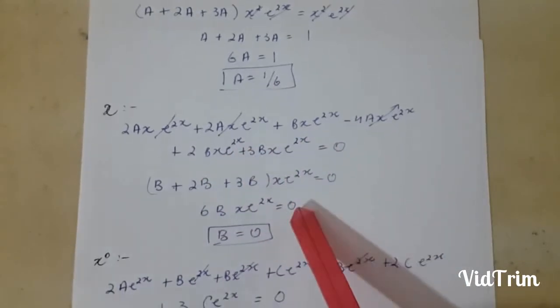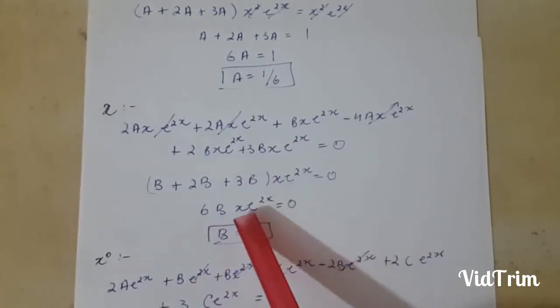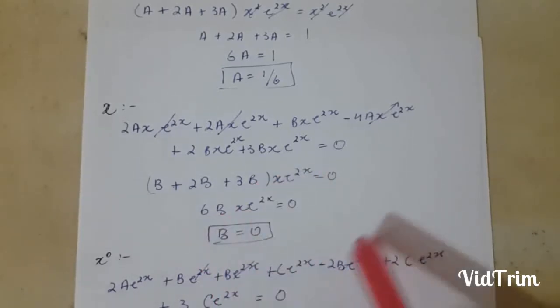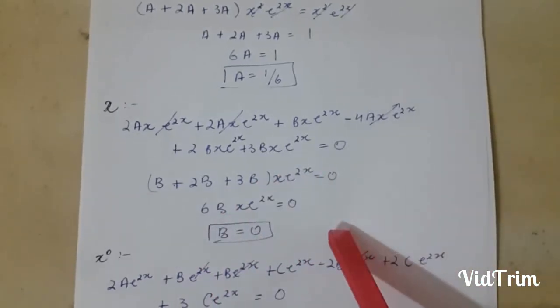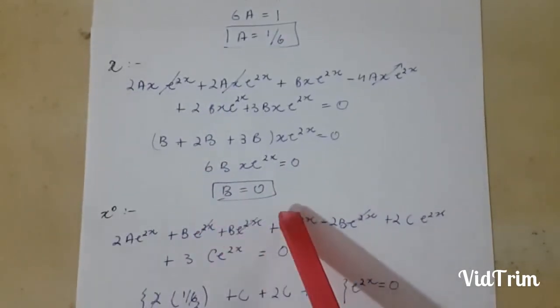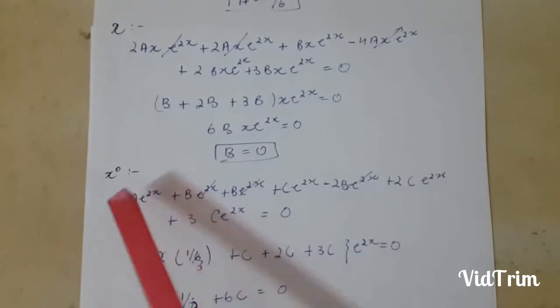and I got 6b x e^x, and when 6 goes to the right hand side it will simply equal 0. So I got the value of b equals 0. Now I am comparing x^0.